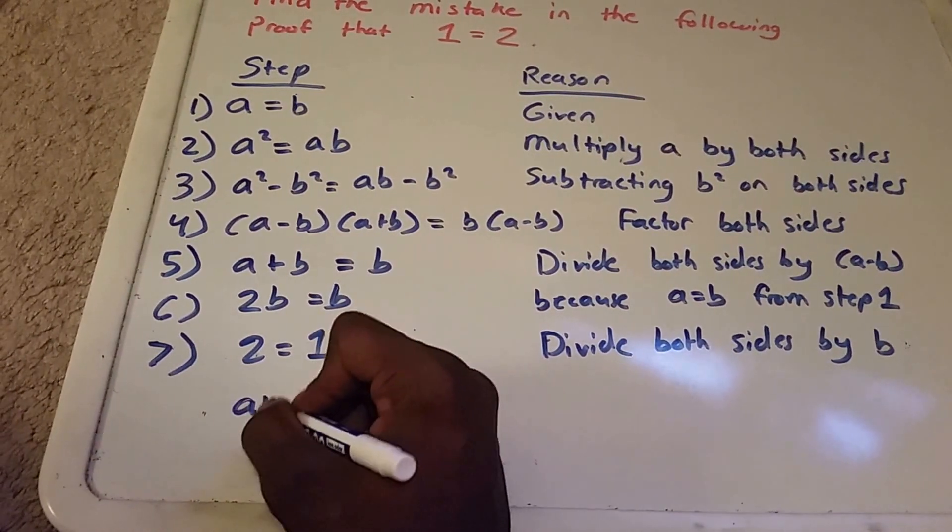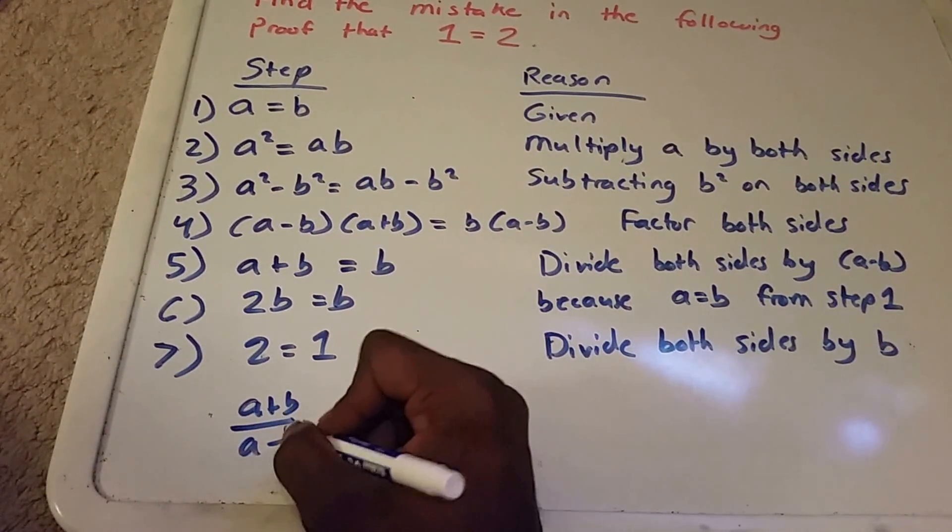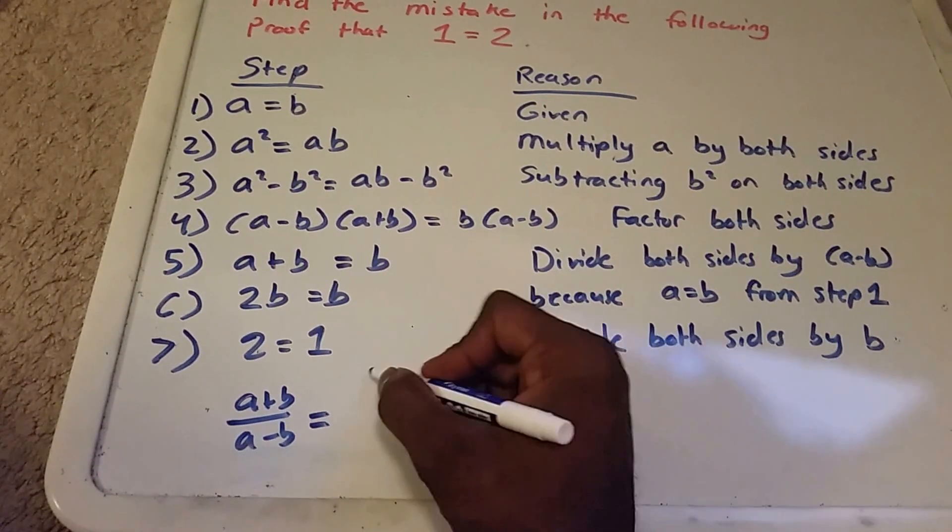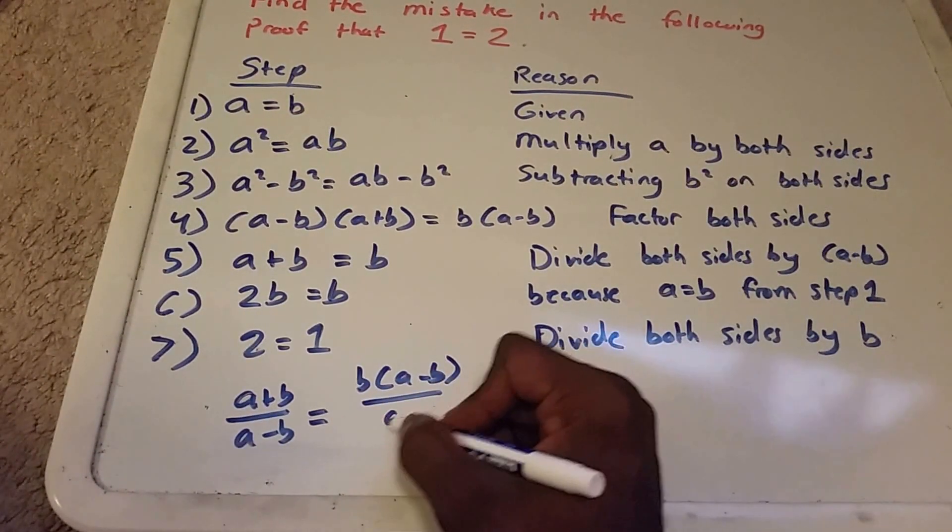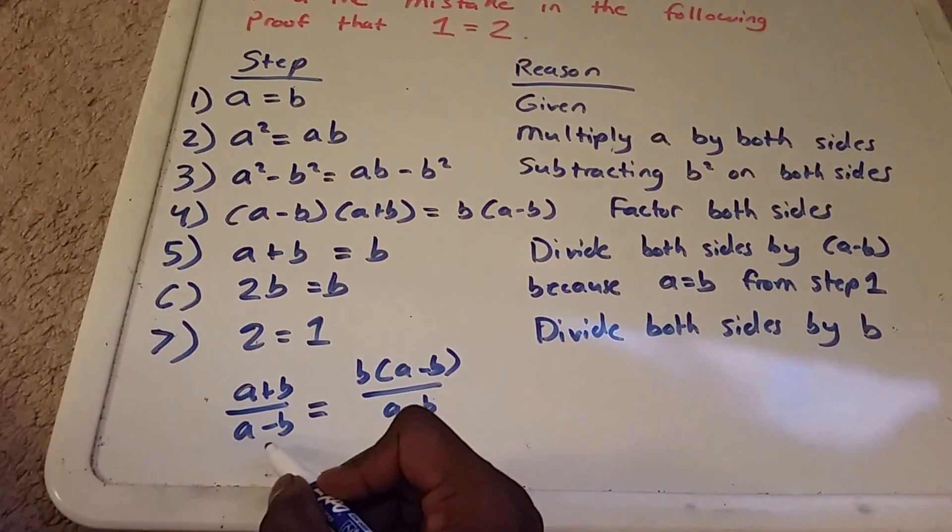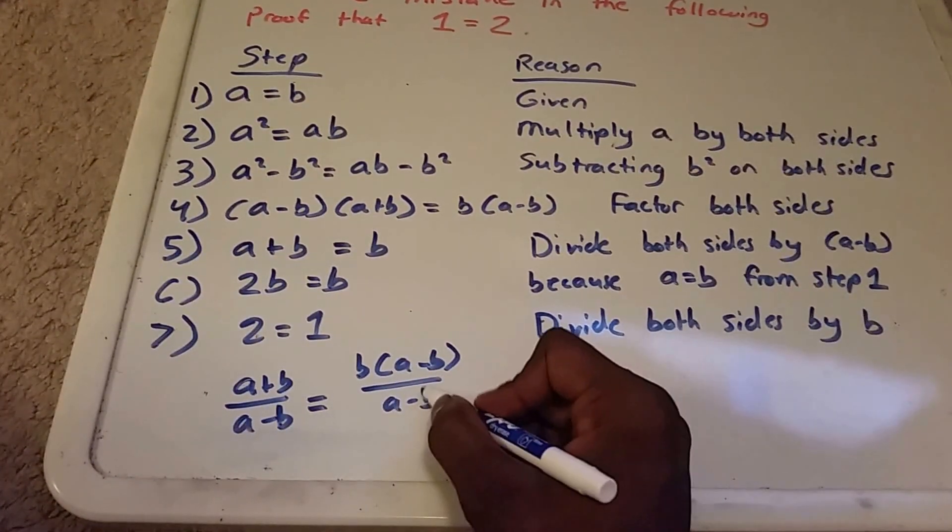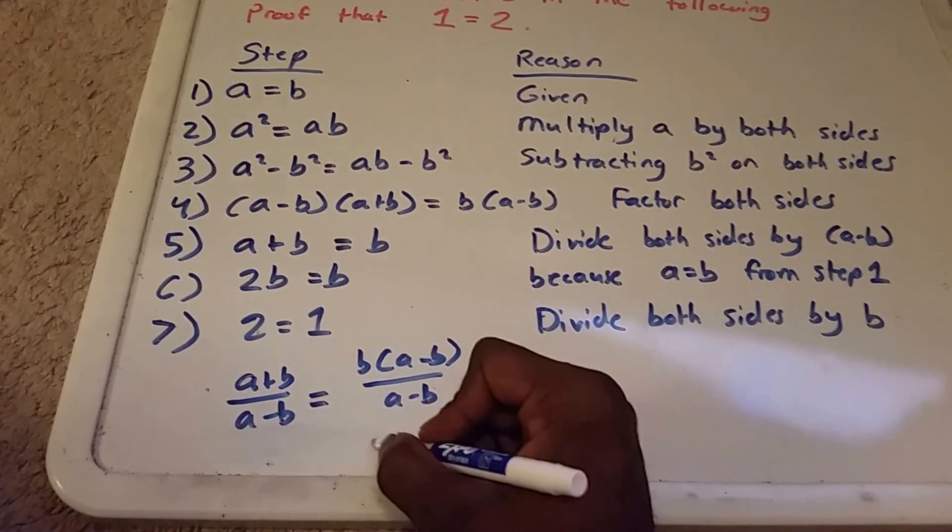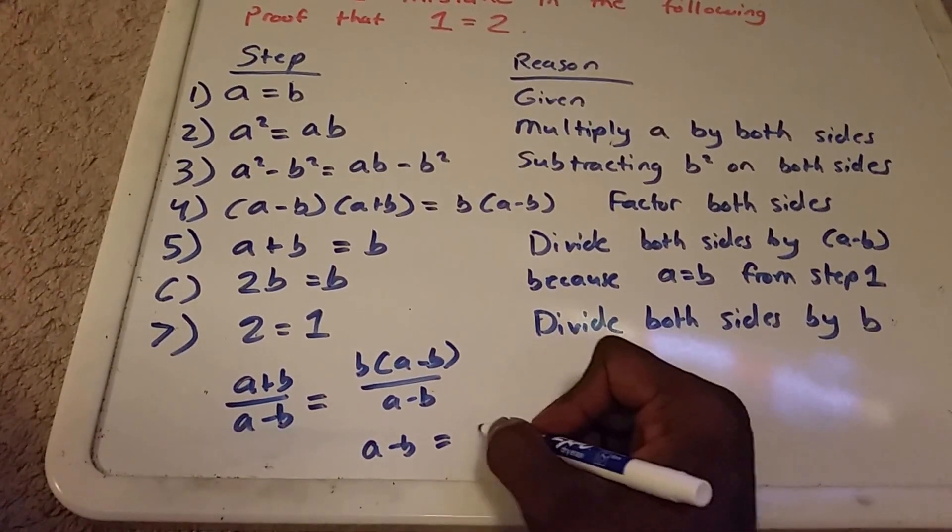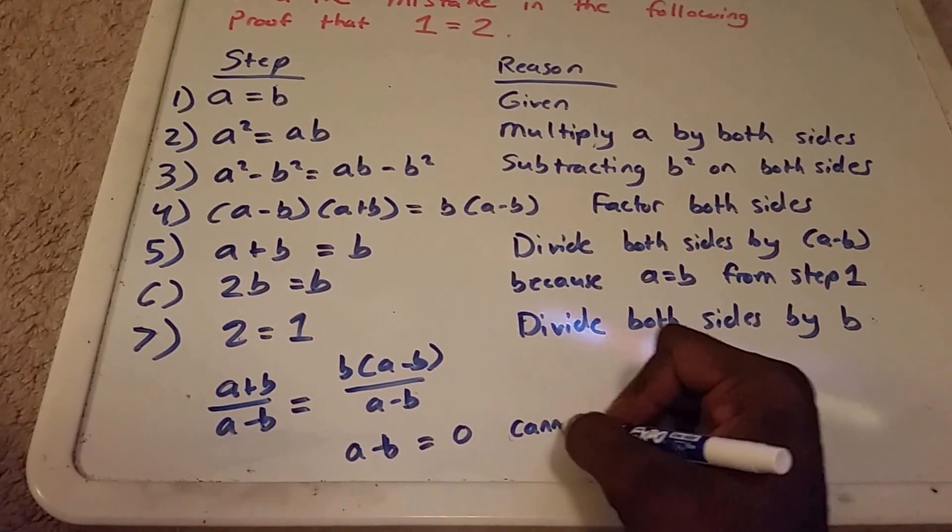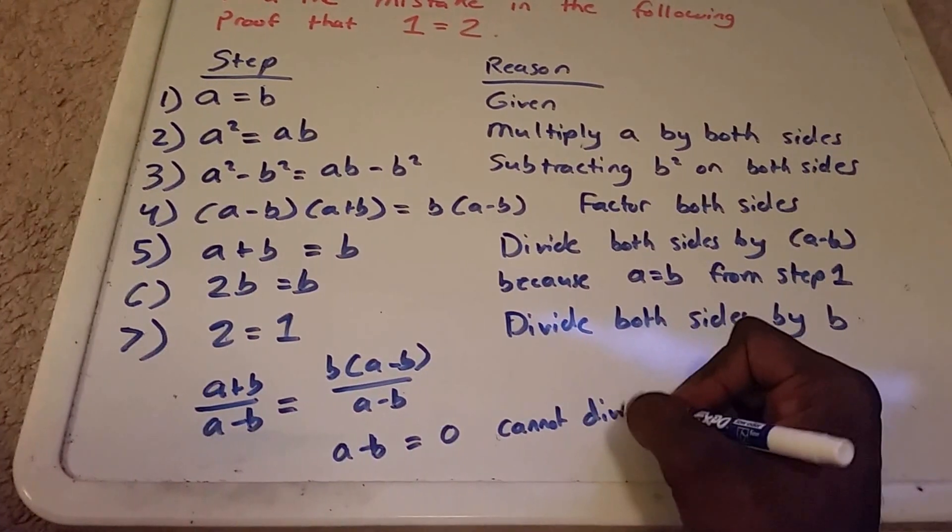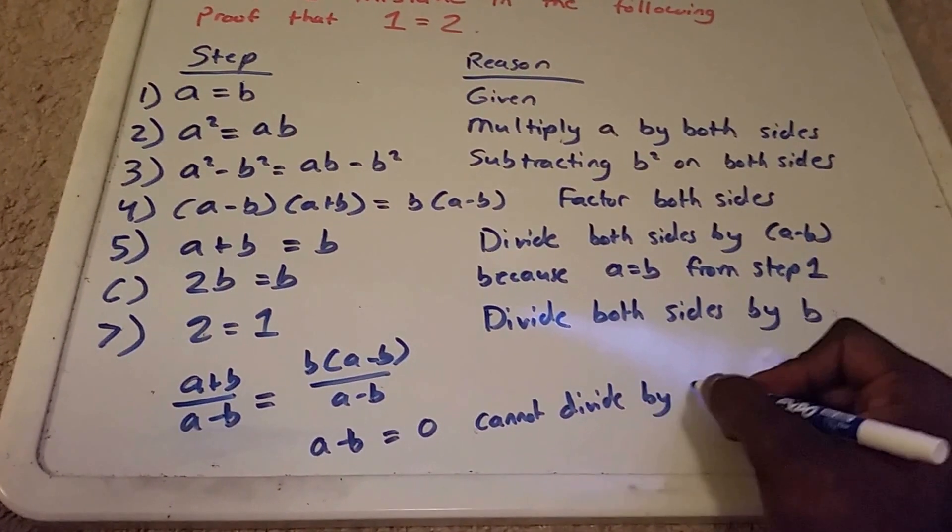So step 5 is where we went wrong when we had (a plus b) divided by (a minus b) equals b times (a minus b) divided by (a minus b). We're dividing by 0 here. So (a minus b) equals 0 and we cannot divide by 0.